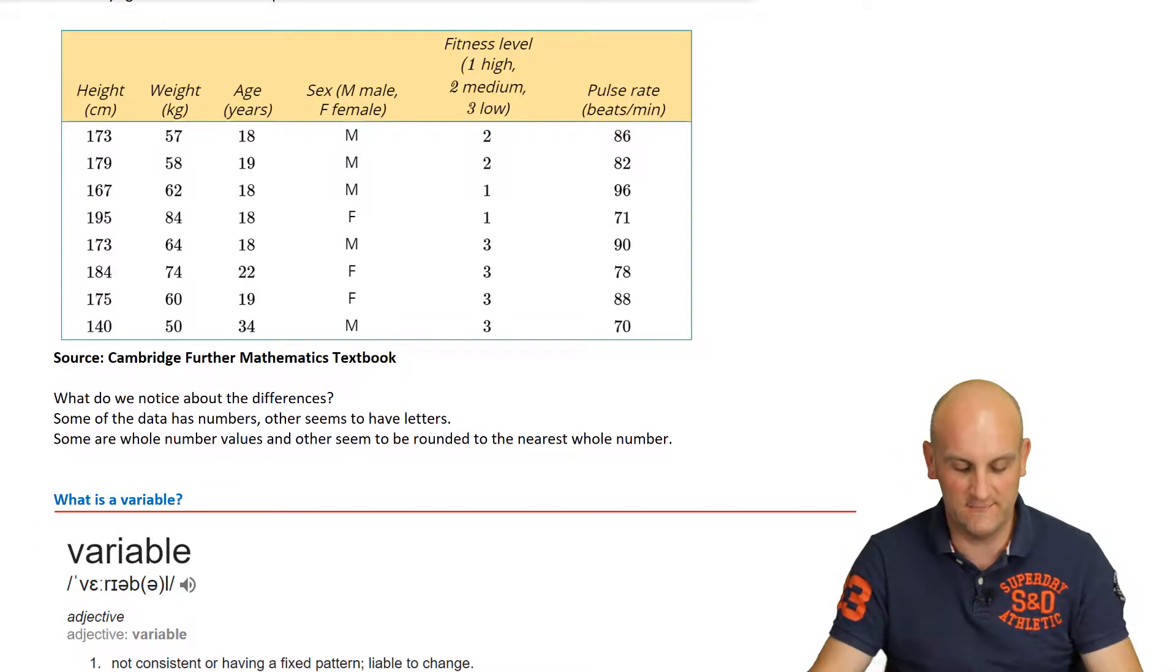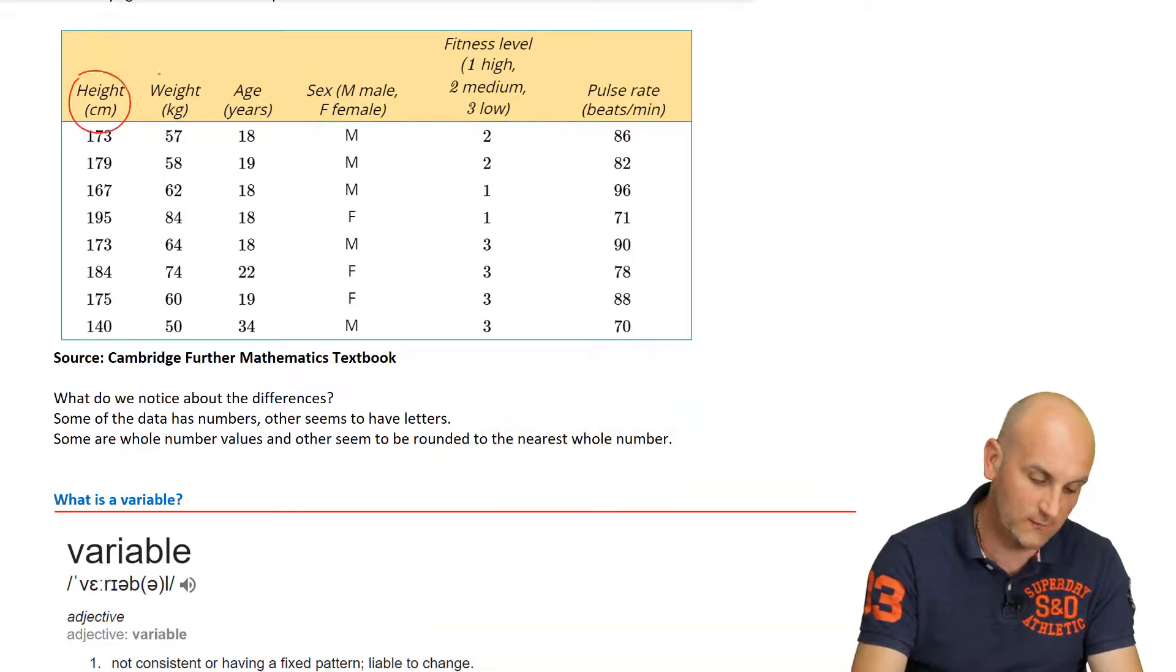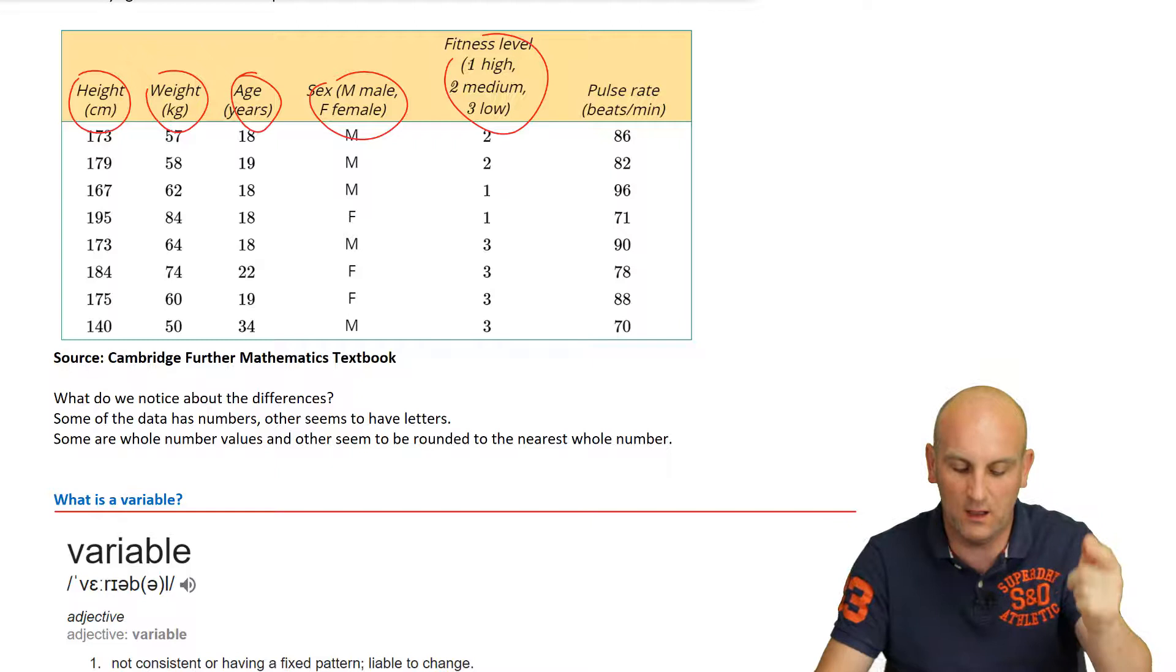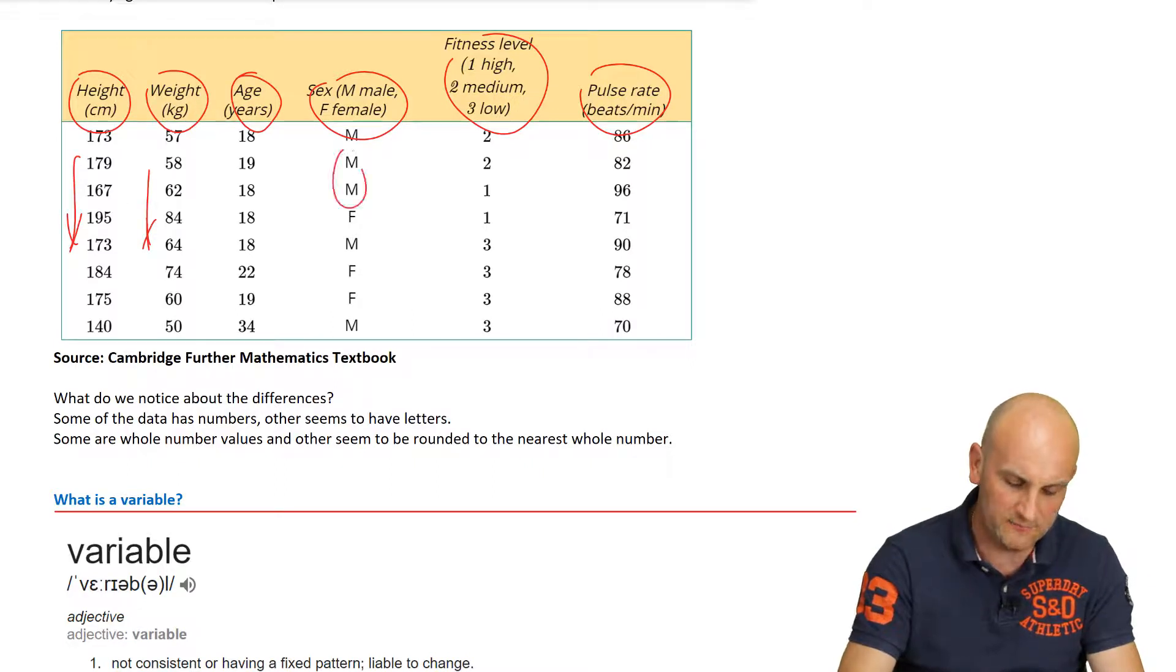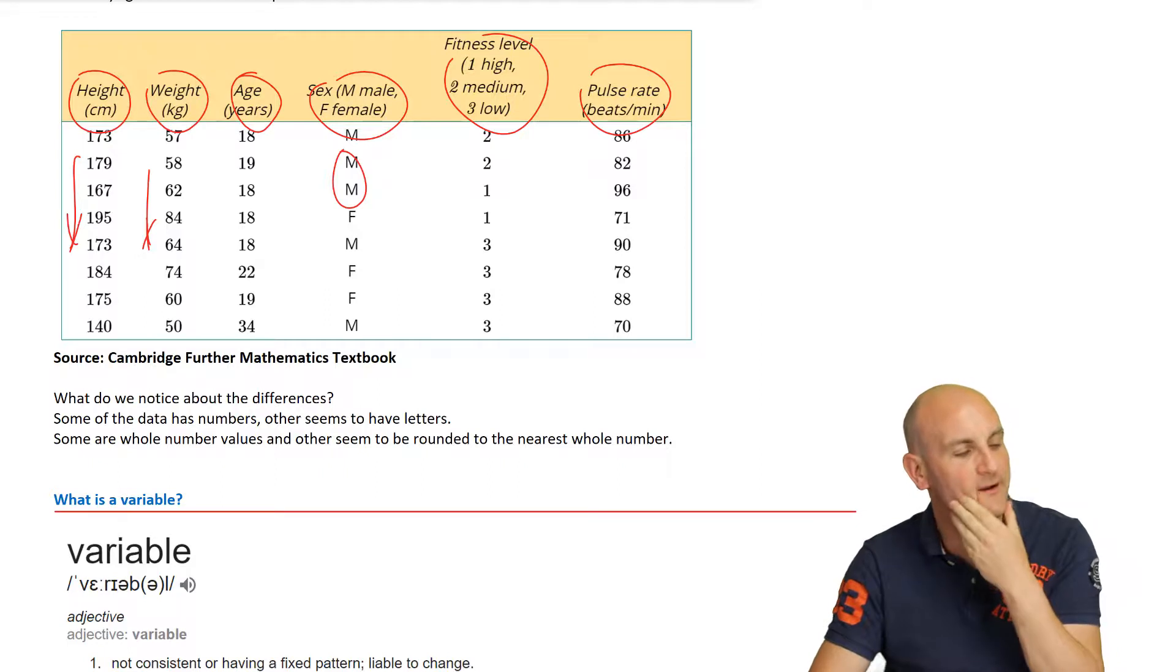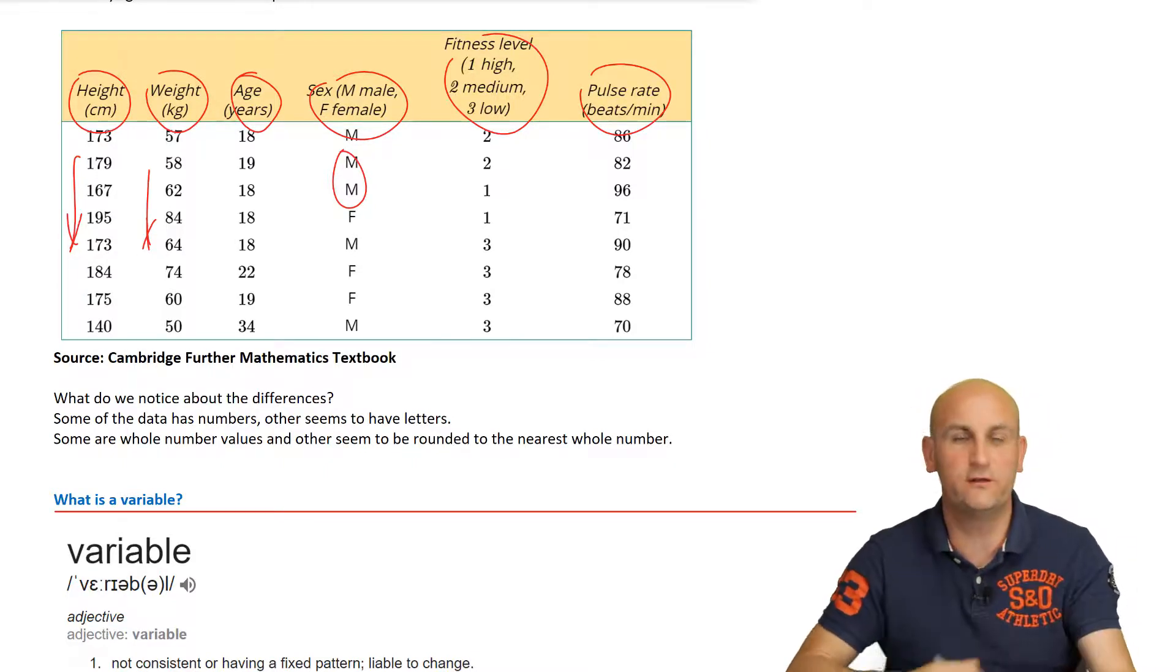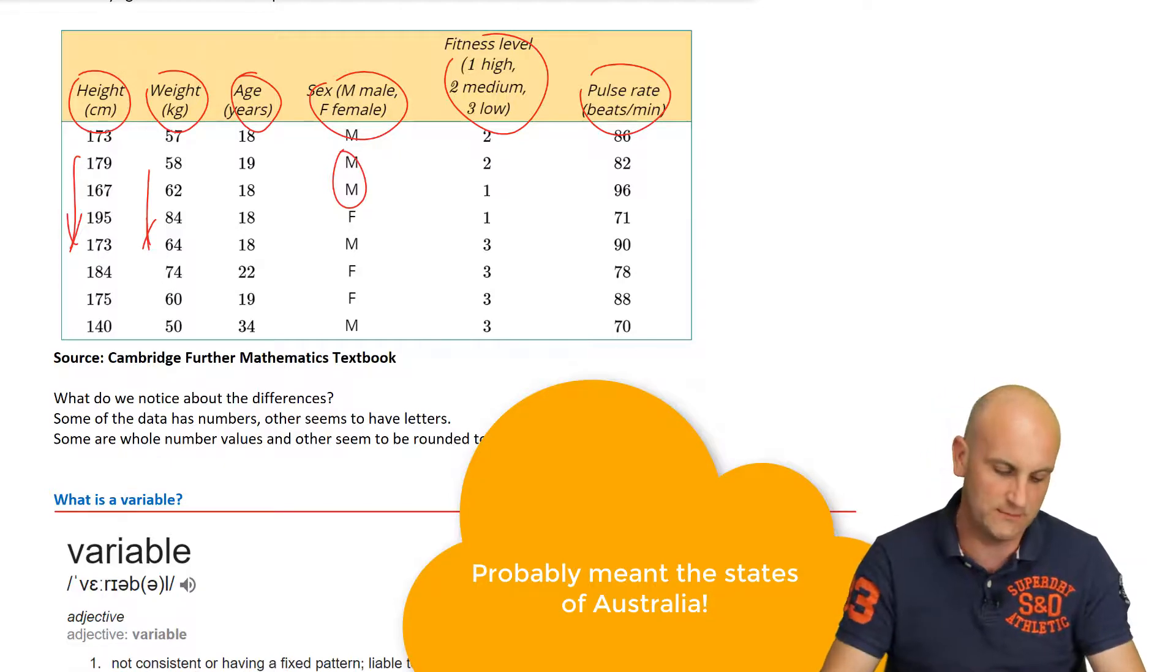Now this table is from the Cambridge Further Mathematics textbook, and it's great. I have to say the best textbook I am aware of using for a long, long time. What can we see? Well, we can see that there are heights and weights and ages and sex. Giggle. There is fitness. Oh, it's been given a high, medium, low but a number, and a pulse rate. Some of these are numbers. You notice how some of these have numerical values, and others seem to have these M's and F's. Numerical and... oh, what could that other one be? Categorical, perhaps. Some of our numbers, some of our data that we collect, will have numbers. Others will seem to have letters, others will have words. I don't know, maybe colors. Think about eye colors, think about the states of Victoria that you live in, or the counties in the United Kingdom, for example. All of this is data.